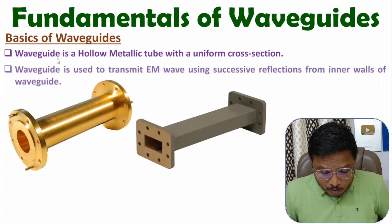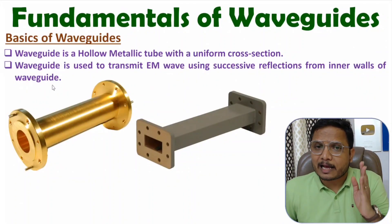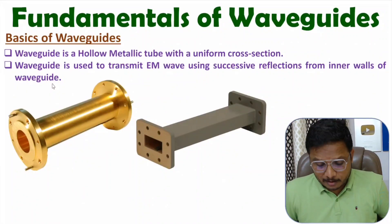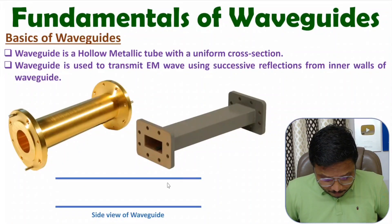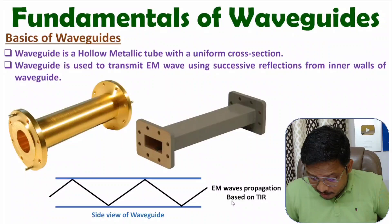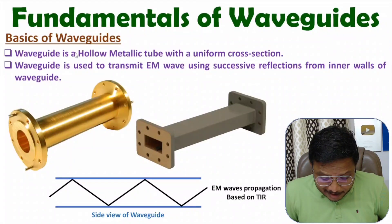Waveguides are used to transmit EM waves using successive reflection from the inner walls of the waveguide. Transmission of signal happens based on total internal reflection (TIR). If you observe the side view of a waveguide, the EM wave is getting reflected from the walls. So EM wave propagation happens based on total internal reflection. Waveguides are hollow metallic tubes with uniform cross-section used to transmit EM waves via successive reflection from the inner walls.